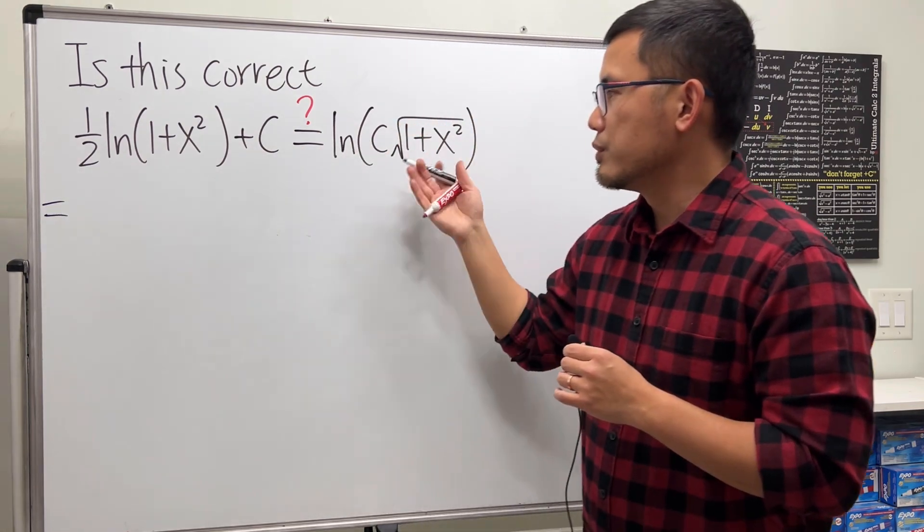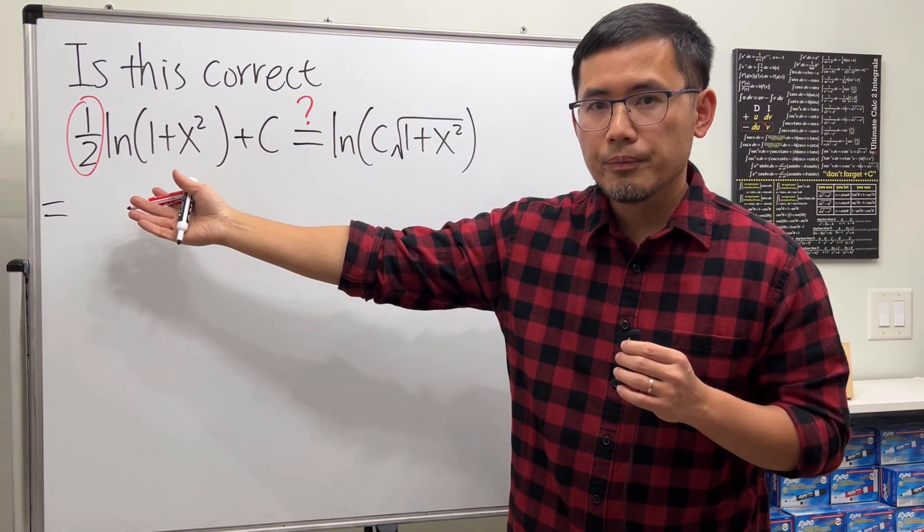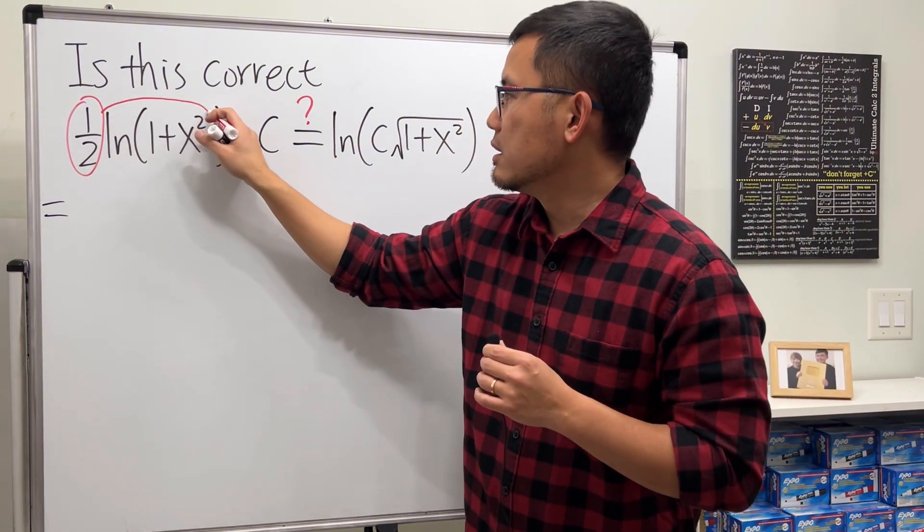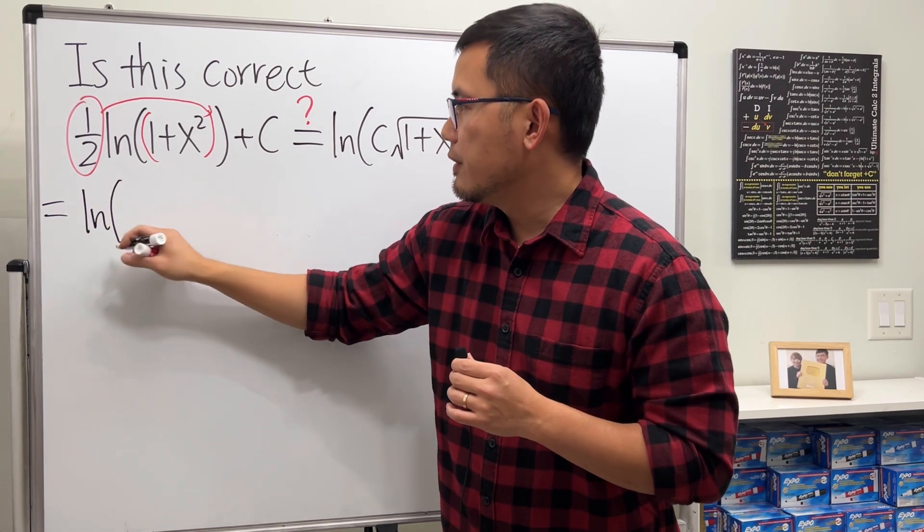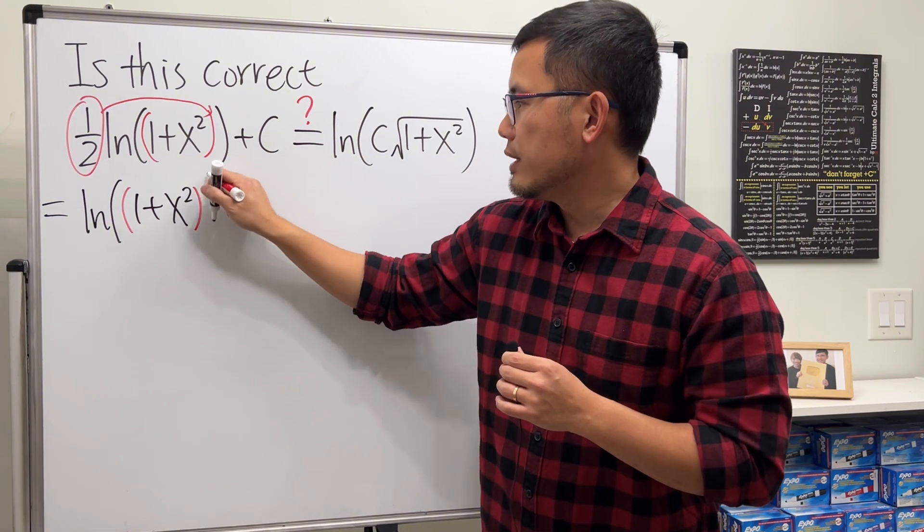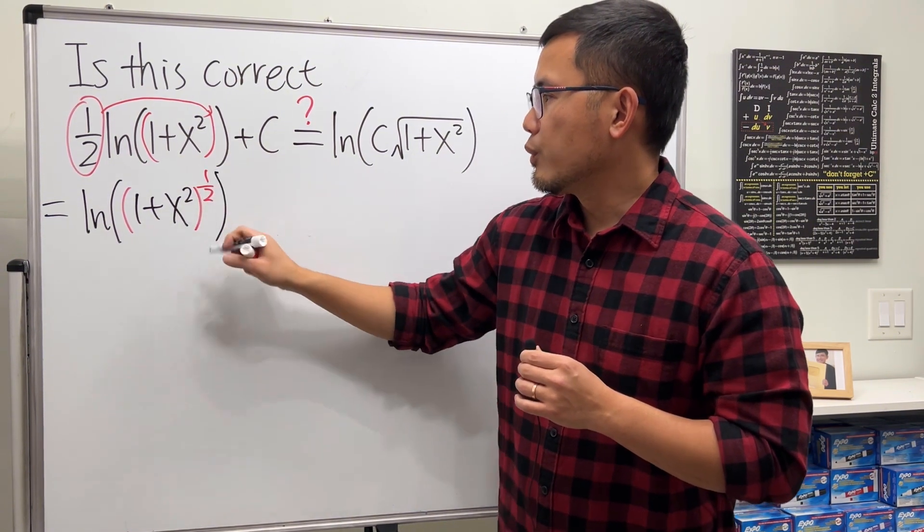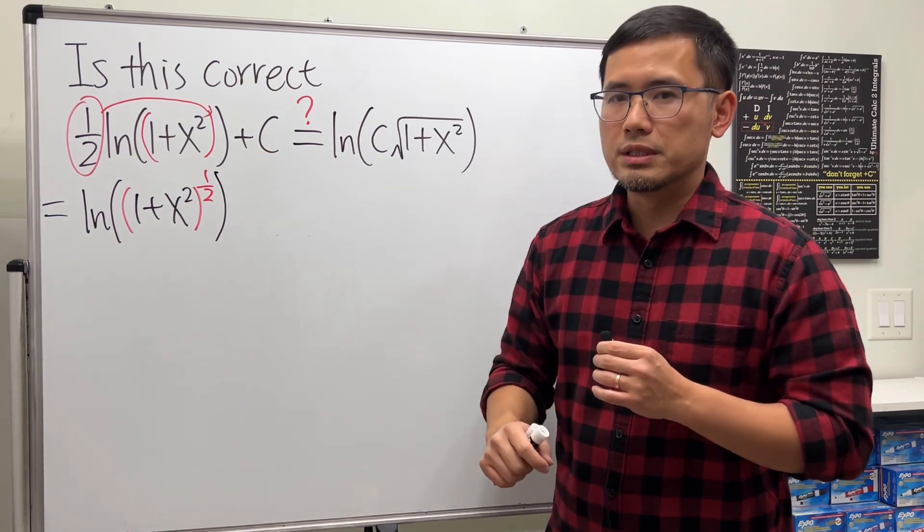First, if you are really doing an integral, check this out. I'm going to start from the left hand side and prove to the right hand side. Firstly, we have the one half in front of the natural log. We can put this back here and make that into an exponent, so we get ln of one plus x squared raised to the one half power, which gives us the square root. Now what are we going to do with the c?